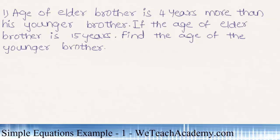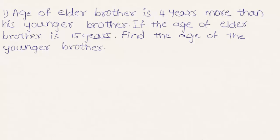Hey guys, welcome to vtccademy.com. In this presentation we are going to solve an example on simple equations. The age of an elder brother is 4 years more than his younger brother. If the age of the elder brother is 15 years, we have to find the age of the younger brother. Let us solve this example.